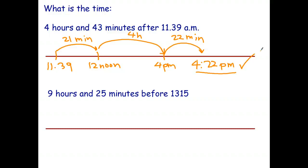Okay, welcome back, students. Well, this one, I'm going to use my timeline, and I'm going to work backwards. So, I'm going to put in the time of 13.15. Now, I'm going backwards. So, first, I'm going to go back 15 minutes. That takes me to 1,300 hours.